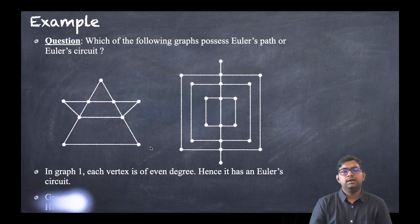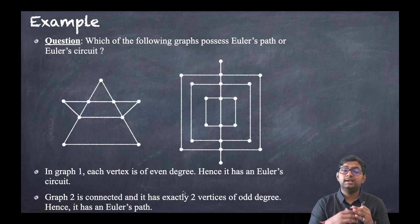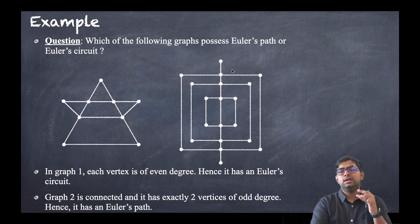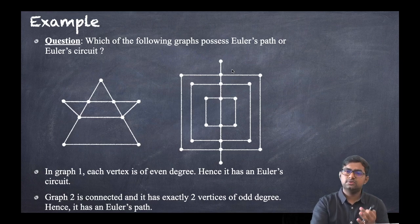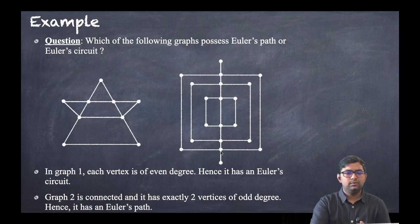In the second graph, it is connected and has exactly two vertices of odd degree — the first and the last, each with degree one. Since there are two vertices of odd degree, it has an Euler's path but not a circuit.